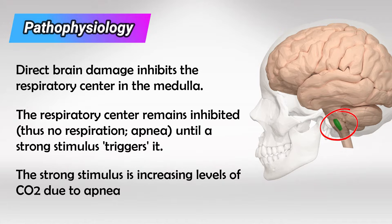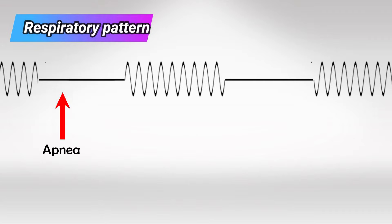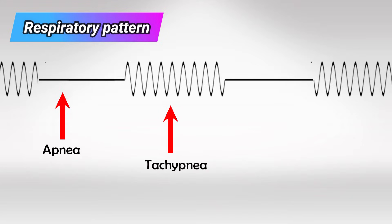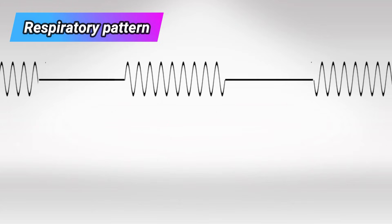Now let's see it in action. Here we have apnea because the respiratory center is inhibited. Now the respiratory center is triggered by high carbon dioxide levels, so we have tachypnea. And due to the washing out of carbon dioxide, we'll have another episode of apnea. And here's how it sounds like.